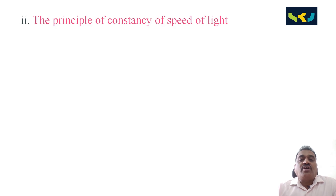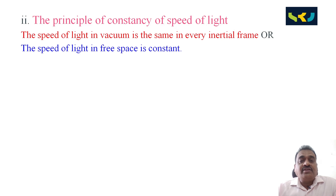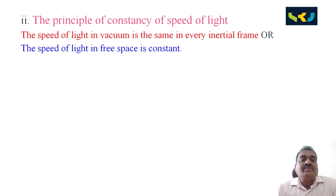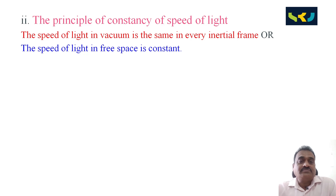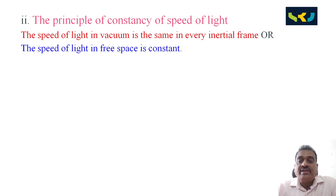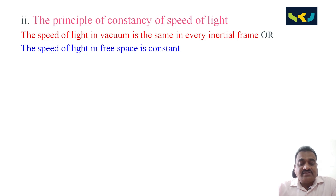Second postulate — the principle of constancy of speed of light: the speed of light in vacuum is the same in every inertial frame. The speed of light in free space is constant, equal to 3 × 10⁸ meters per second.